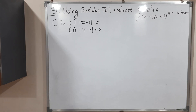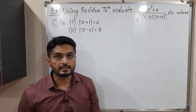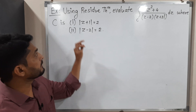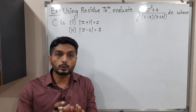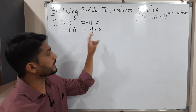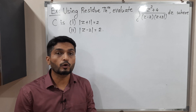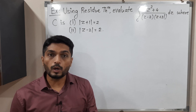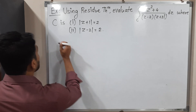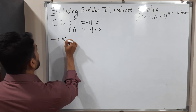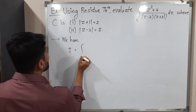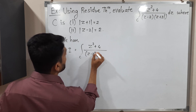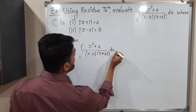In this video we are going to discuss this example. We have a complex integration we have to solve — we have to find the value of this complex integration. They have given two different curves, so you can consider these as two different problems. This is the first curve, this is the second curve, and we have to find the value of that integration for both curves. Let us call the given integral as I: the integral over C of (z² + 4) / ((z − 2)(z + 3i)) dz.